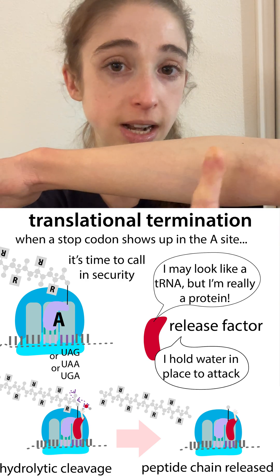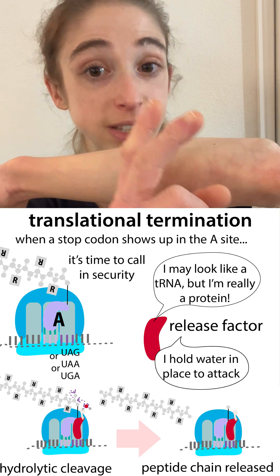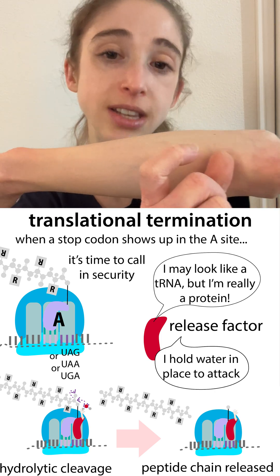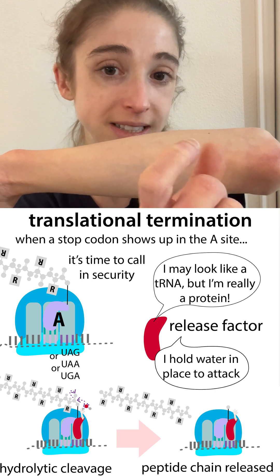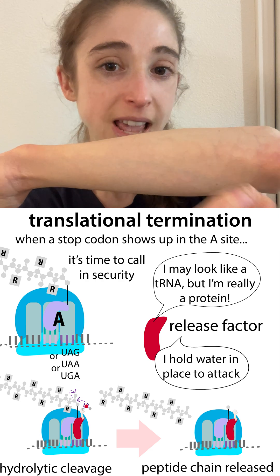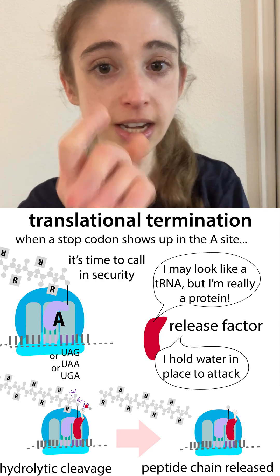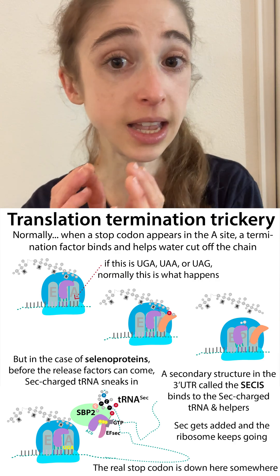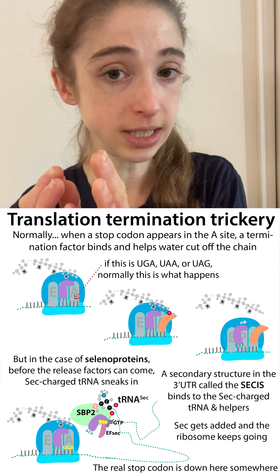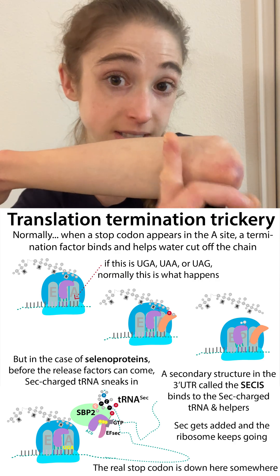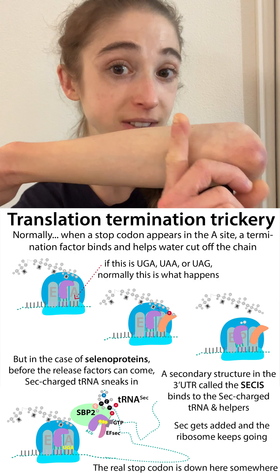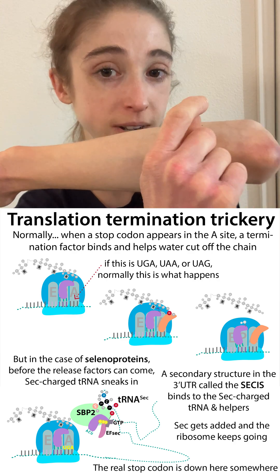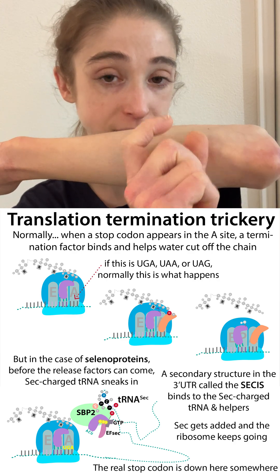What happens at the stop codon is that instead of a tRNA coming, a release factor comes — which is a protein that mimics the tRNA — but instead of bringing in an amino acid, it basically cuts off the growing chain, and the protein gets released. In the case of selenocysteine, you want to take over that stop codon and instead have the selenocysteine tRNA come in and bring the selenocysteine to incorporate.